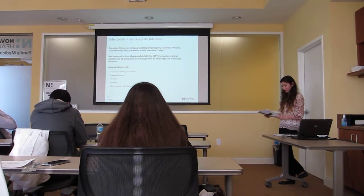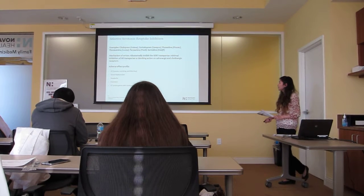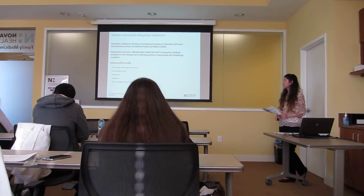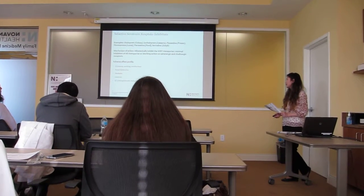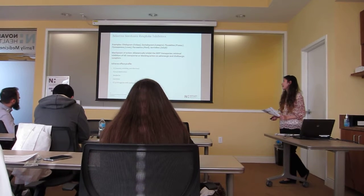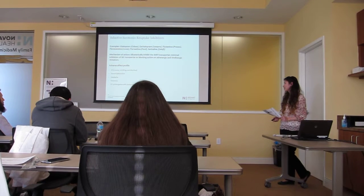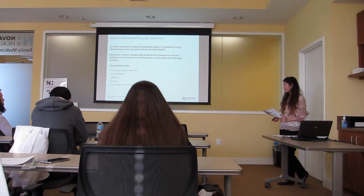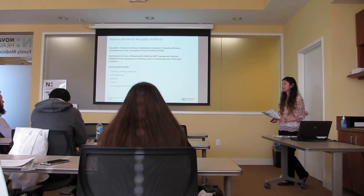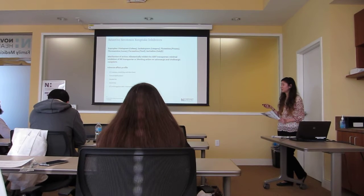For selective serotonin reuptake inhibitors, examples include citalopram, escitalopram, fluoxetine, fluvoxamine, paroxetine, and sertraline. These work by allosterically inhibiting the serotonin transporter, causing minimal inhibition of the norepinephrine transporter, or blocking actions of adrenergic and cholinergic receptors. Adverse effects include GI symptoms such as nausea, vomiting, and diarrhea, as well as sexual dysfunction, headache, insomnia, and QT prolongation with citalopram. The dosing recommendation for citalopram is not to exceed 40 mg due to the risk of QT prolongation.